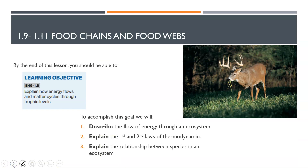So where does all this NPP go? You should be able to explain how energy flows and matter cycles through the trophic levels in these next lessons. We'll do this by describing the flow of energy through an ecosystem, explaining the first and second laws of thermodynamics, and explaining the relationship between species in an ecosystem.